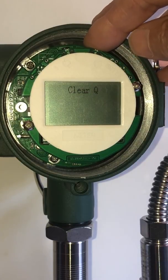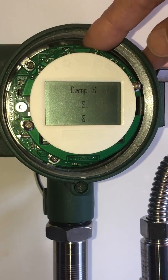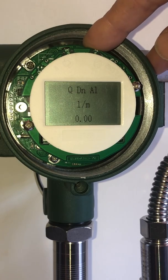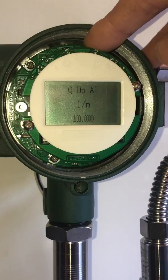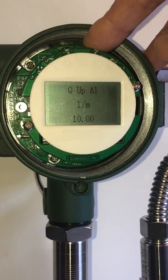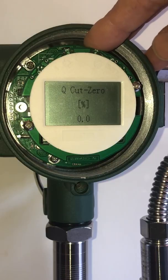We can clear the totalizer, the comm address, the damping, what the liters per minute low is, the higher value, the cutoff, whether you want to ignore some low values.